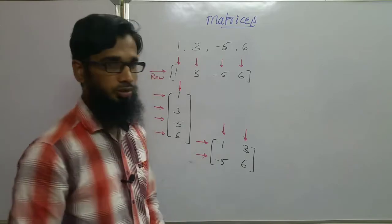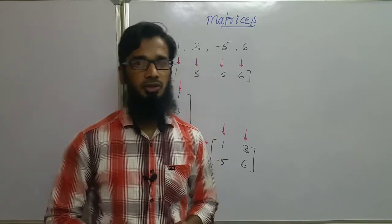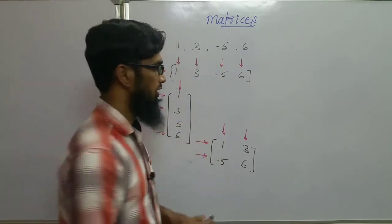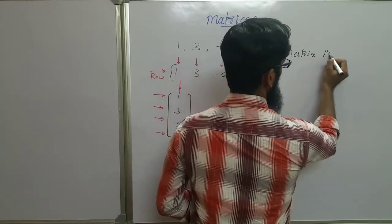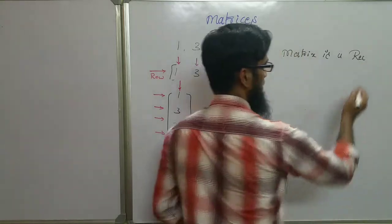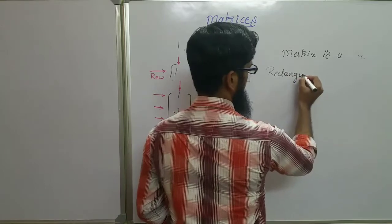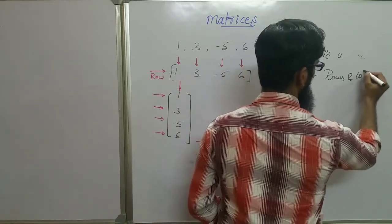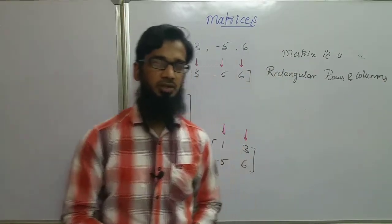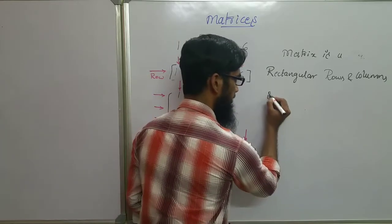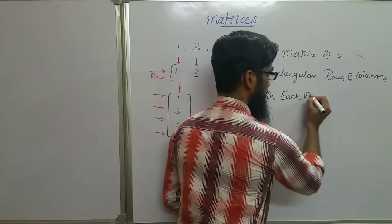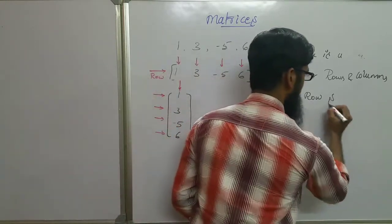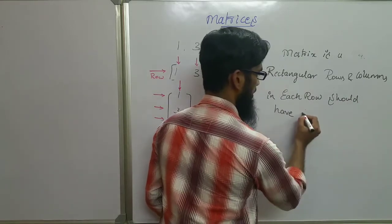So what is a matrix? A matrix is a rectangular arrangement of rows and columns in which each row should have an equal number of elements. This is the basic first condition.